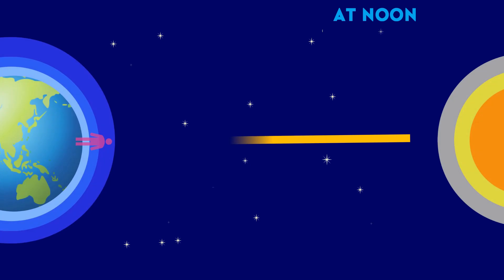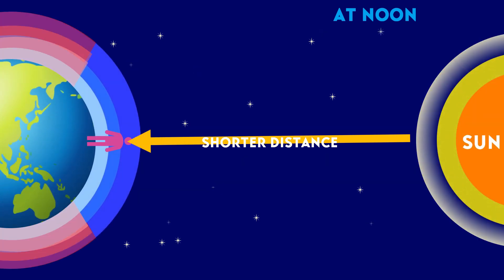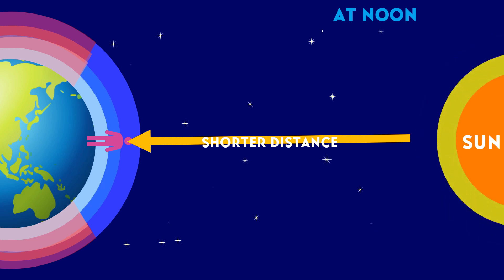Meanwhile, at noon the sun is vertically above our head. So, the sunlight travels a shorter distance through the atmosphere to reach the observer.